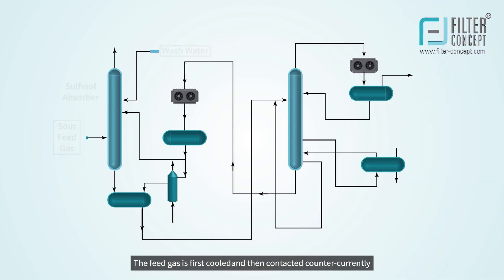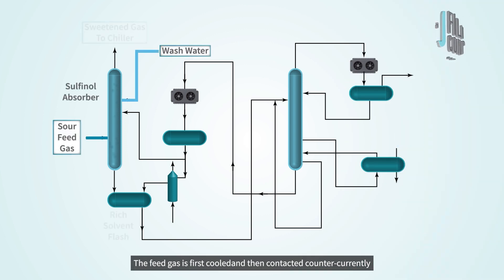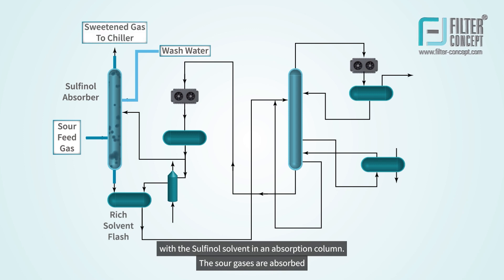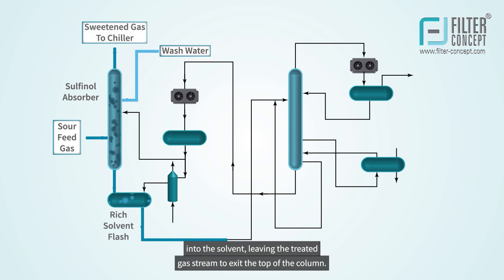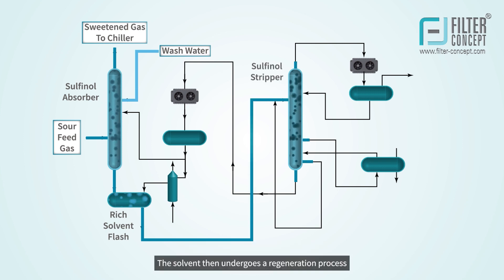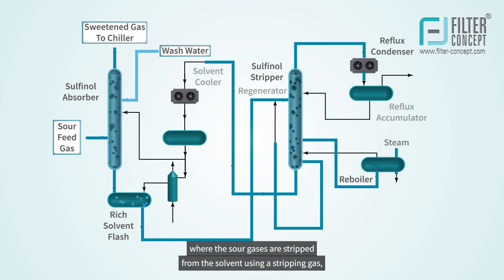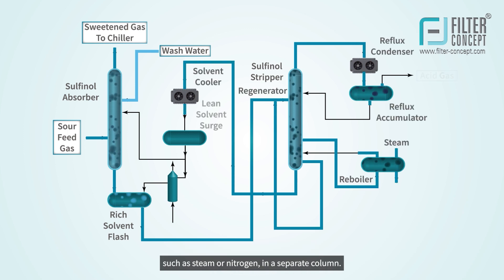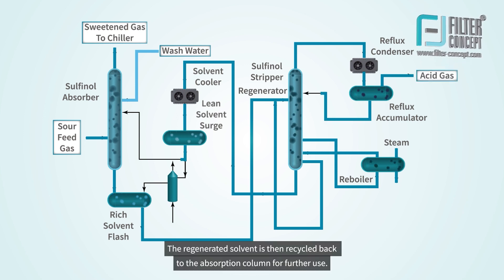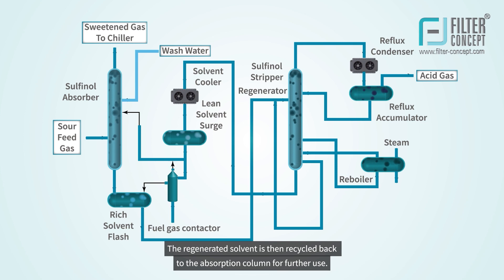The feed gas is first cooled and then contacted countercurrently with the sulfonyl solvent in an absorption column. The sour gases are absorbed into the solvent, leaving the treated gas stream to exit the top of the column. The solvent then undergoes a regeneration process, where the sour gases are stripped from the solvent using a stripping gas, such as steam or nitrogen, in a separate column. The regenerated solvent is then recycled back to the absorption column for further use.